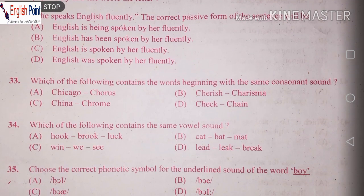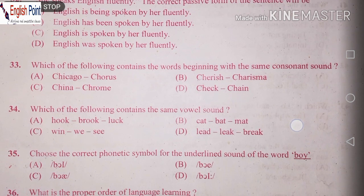Which of the following contains the word with the same consonant sound? Consonant sound: Chicago, Chorus, Charish, Charisma, China, Chrome, Chet and Chin. Chin — yeah, this is the right answer.